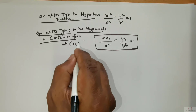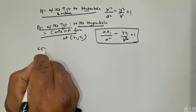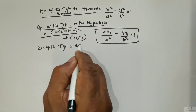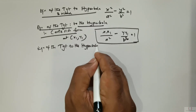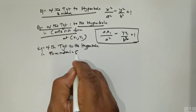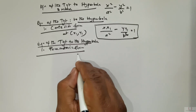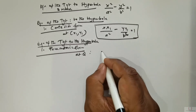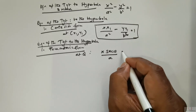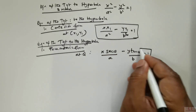This is at the point x1, y1. In parametric form, the equation of the tangent to the hyperbola at theta is x times secant theta divided by a, negative y times tan theta divided by b, is equal to 1.